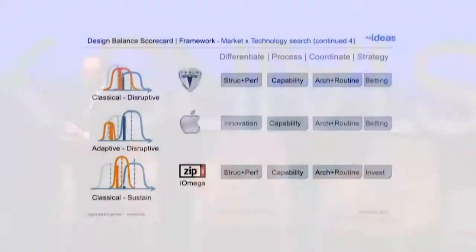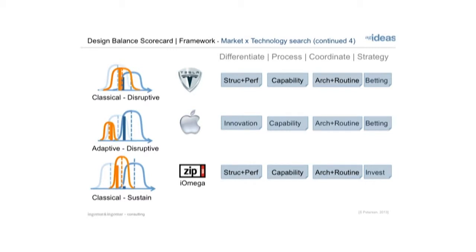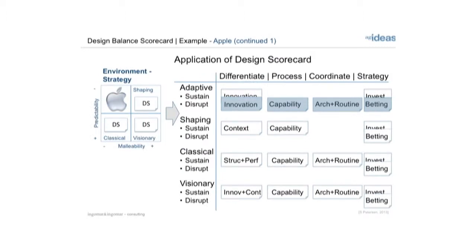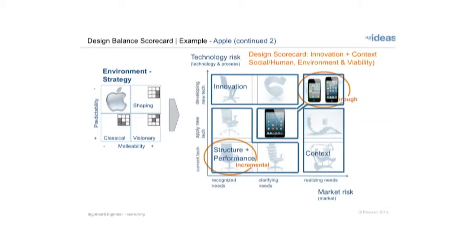The last example is a classical sustainable strategy — Zip drives. They were a very popular and successful company about 15 years ago, basically increasing the storage capacity on disks and offering something people needed, but more of it, in an incremental fashion. And just to reiterate, looking at Apple's strategy: focus on innovation capabilities, architecture routines, and betting — that is the strategy that follows.